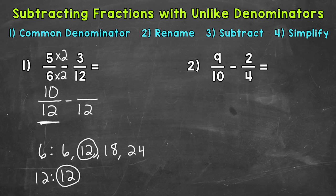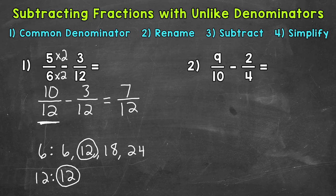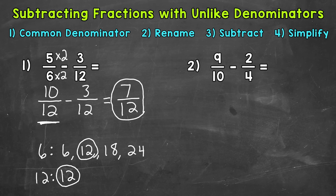Now we need to do 3 twelfths. Well, 3 twelfths already has a denominator of 12, so we don't need to rename — we can just bring the 3 down. Once we rename, we can subtract. When we subtract fractions, we subtract the numerators: 10 minus 3 is 7, and we keep the denominator of 12 the same. So 7 twelfths is our answer. 7 twelfths is in simplest form — the only common factor between 7 and 12 is 1. So our final simplified answer is 7 twelfths.